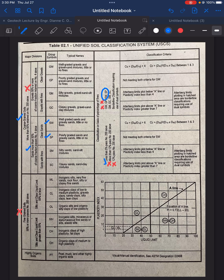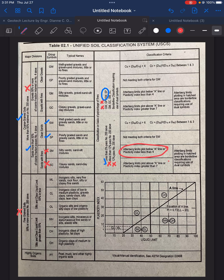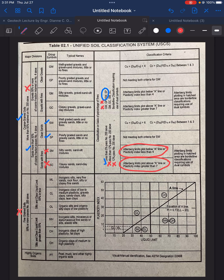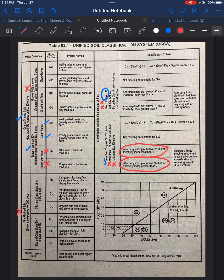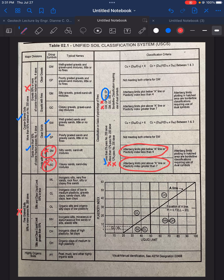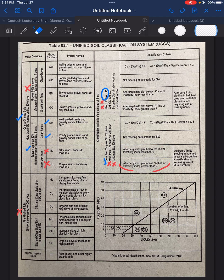Now, another clue here why we are not going to use SM and SC is because of the Atterberg limit. We needed the Atterberg limits for these two criteria. Going back to our given, we don't have liquid limit and plastic limit. So having no liquid limit and plastic limit, therefore, we are going to remove this criteria already. So it's no longer SM or SC.